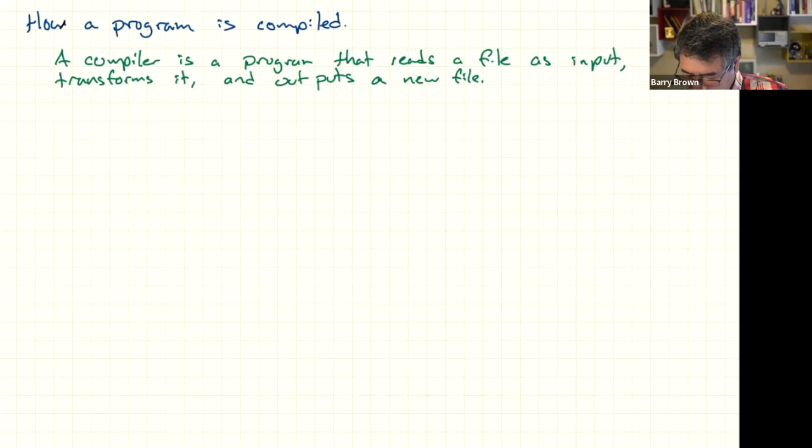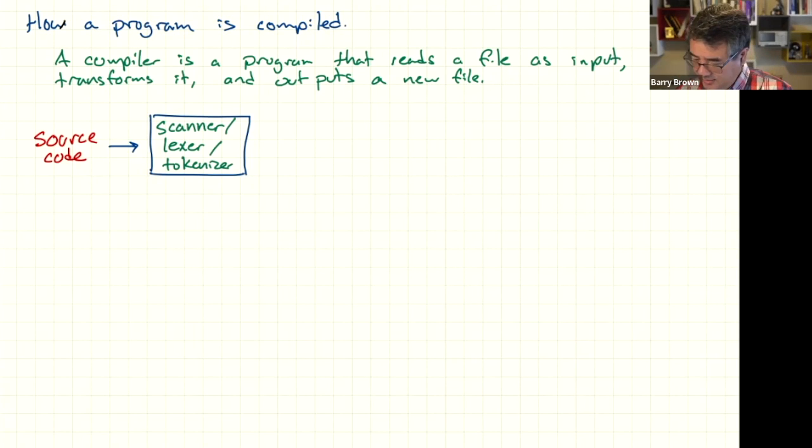So let's draw this diagram here. So you start with your source code, which could be C or Java or Python, and then the source code goes through the first step, which is known by a variety of names. It's either called a scanner or a lexor or a tokenizer. And let's say that the source code that you're compiling is really simple. All it does is it allows you to do a variable assignment and execution of expressions. So let's say it's something like x equals 3 times y plus 6.